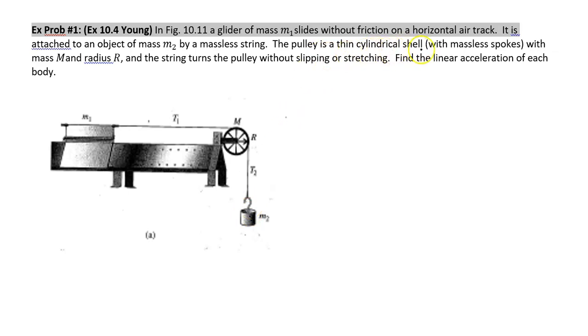This pulley is a thin cylindrical shell with massless spokes with mass M and radius R, and the string turns the pulley without slipping or stretching. Find the linear acceleration of each body.